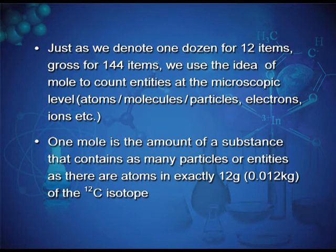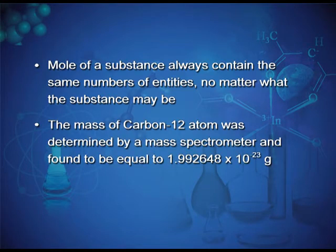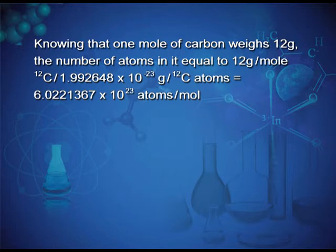One mole is the amount of a substance that contains as many particles as there are atoms in exactly 12 grams (0.012 kg) of carbon-12. The mass of a carbon-12 atom was determined by mass spectrometer to be 1.992648 × 10⁻²³ grams. Knowing that one mole of carbon weighs 12 grams, the number of atoms = 12 g ÷ 1.992648 × 10⁻²³ g = 6.0221367 × 10²³ atoms per mole.